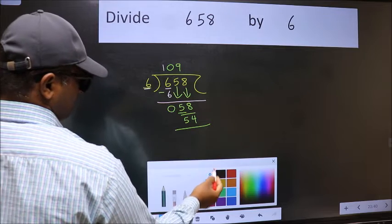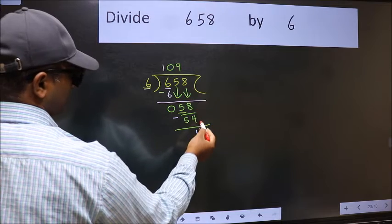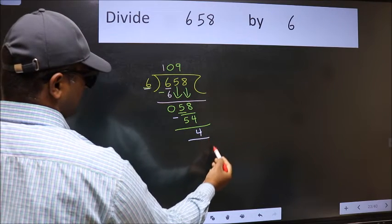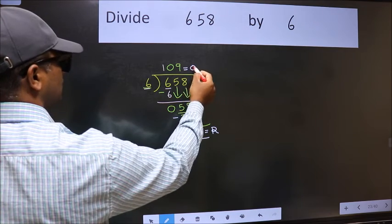Now we should subtract. We get 4. No more numbers to bring it down, so we stop here. This is our remainder and this is our quotient.